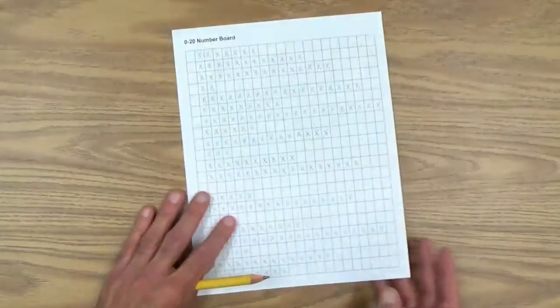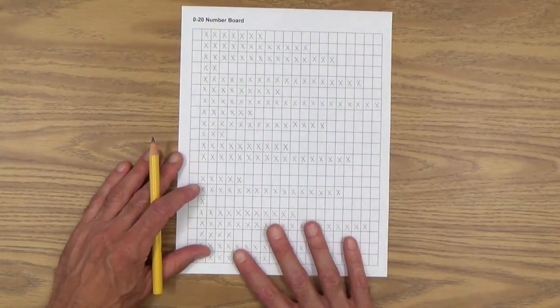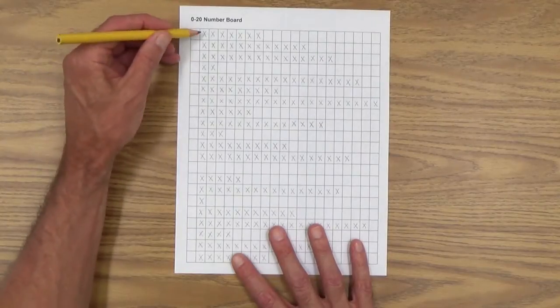And then finally, you're moving on to what we call the reverse number board again, same as the zero to 10 reverse number board. But now they're counting more X's.